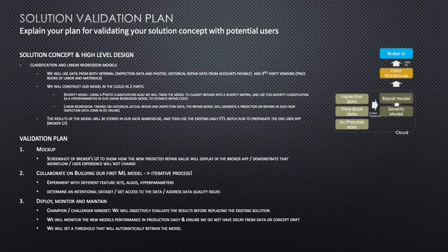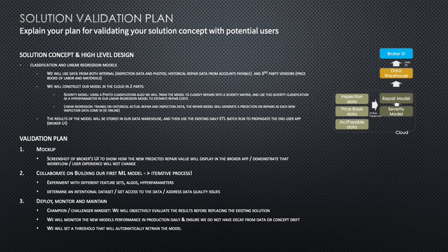To validate this, the first step is a mock-up of the broker UI — showing users and the executive sponsor that the workflow and user experience won't fundamentally change; we're simply replacing the heuristic repair value with something better. Then we'll build the model iteratively, requiring close collaboration with the brokerage team and executive sponsor to experiment with different feature sets, algorithms, and hyperparameters to fine-tune the model. I'll need their domain expertise to define the required data, gain access to it, and address data quality issues.